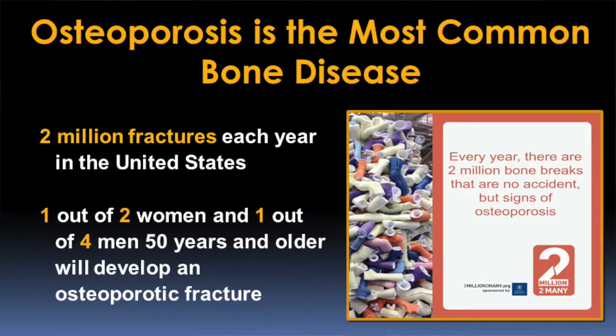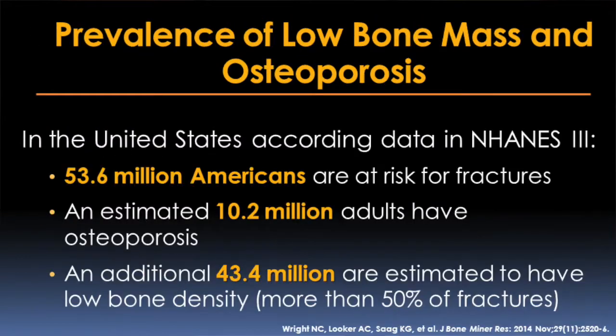Osteoporosis is a weakening of the bones that results in fractures. There are 2 million fractures each year in the United States, and overall 54 million Americans have an increased risk of fracture or actually have osteoporosis. A spine fracture, a hip fracture, some wrist fractures, and humerus or arm fractures are considered osteoporotic fractures.